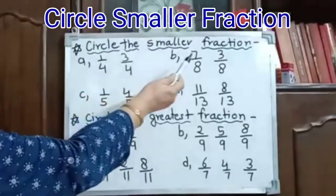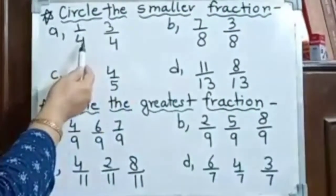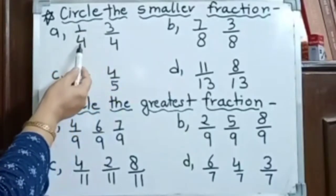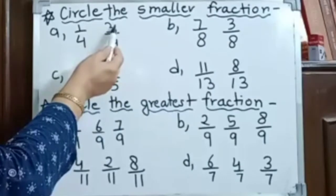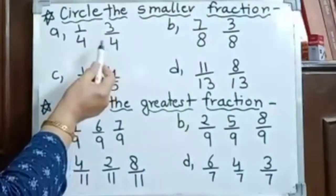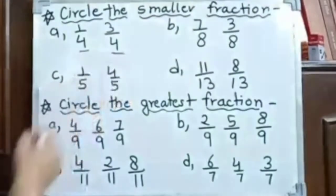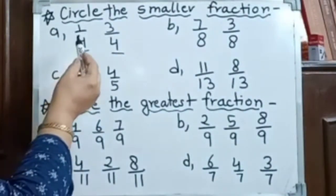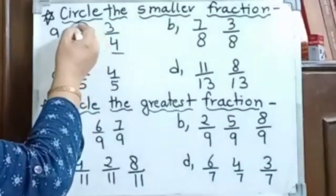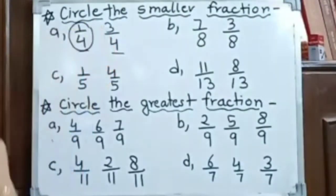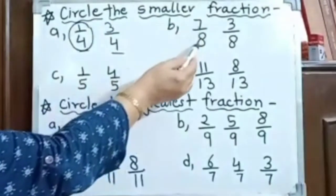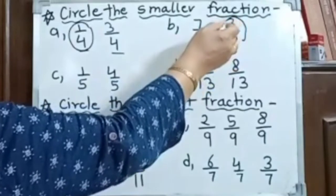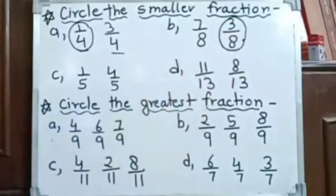Circles the smaller fraction. We have 1 by 4 and 3 by 4. Here we have 1 as numerator, 4 as denominator. Here we have 3 as numerator, 4 as denominator. The denominators are the same, so the smaller numerator is the smaller fraction. Here 7 by 8 and 3 by 8 — 3 by 8 is smaller, so this is the smaller fraction.